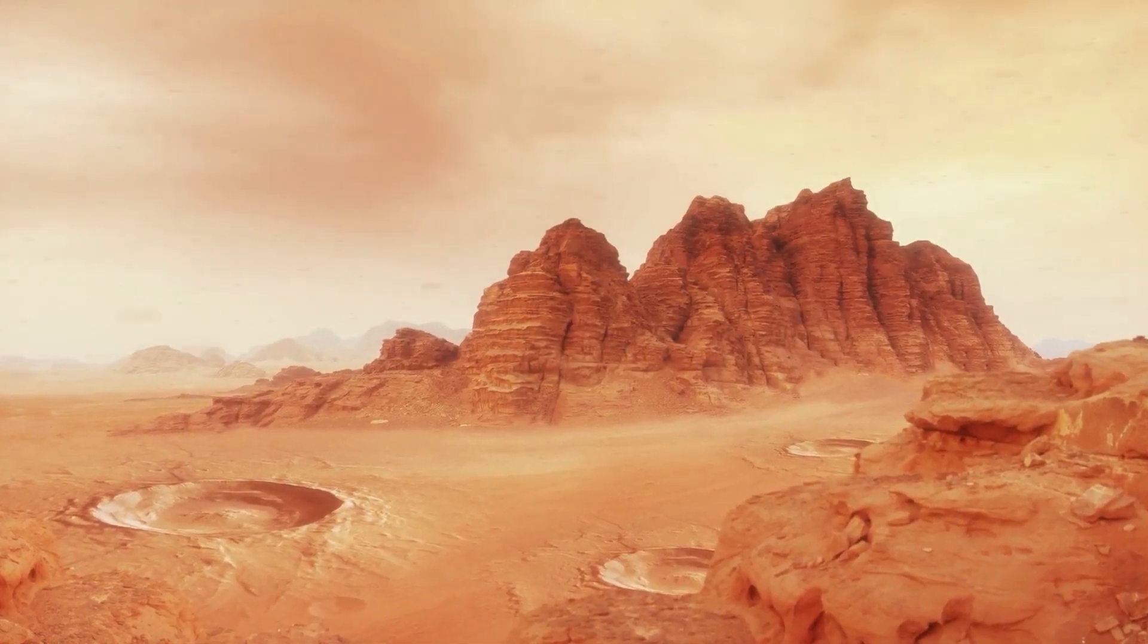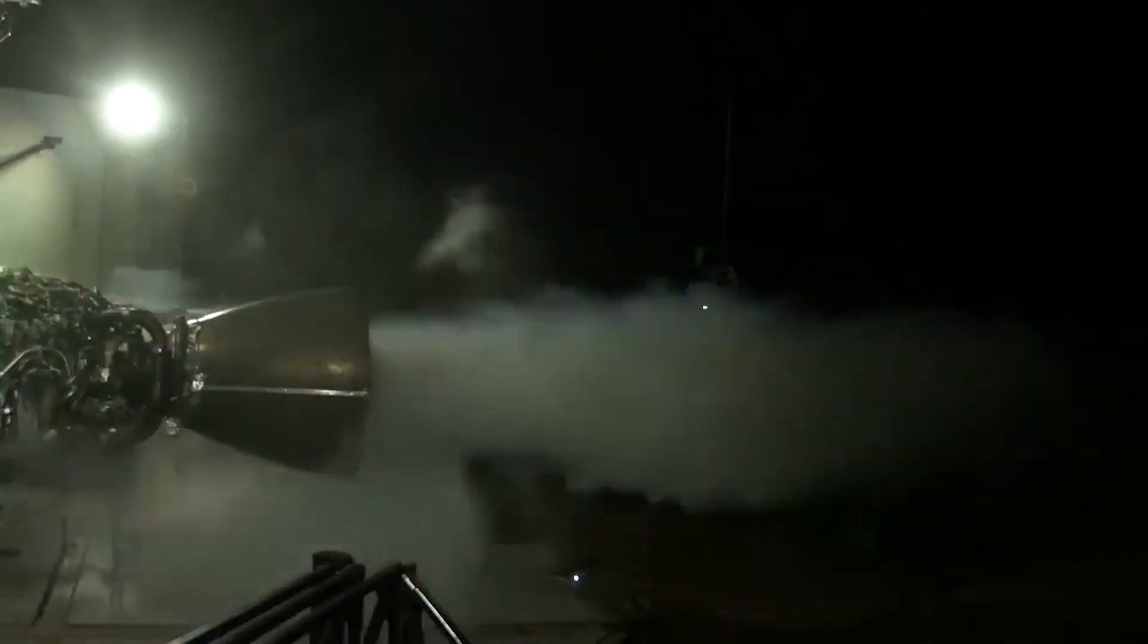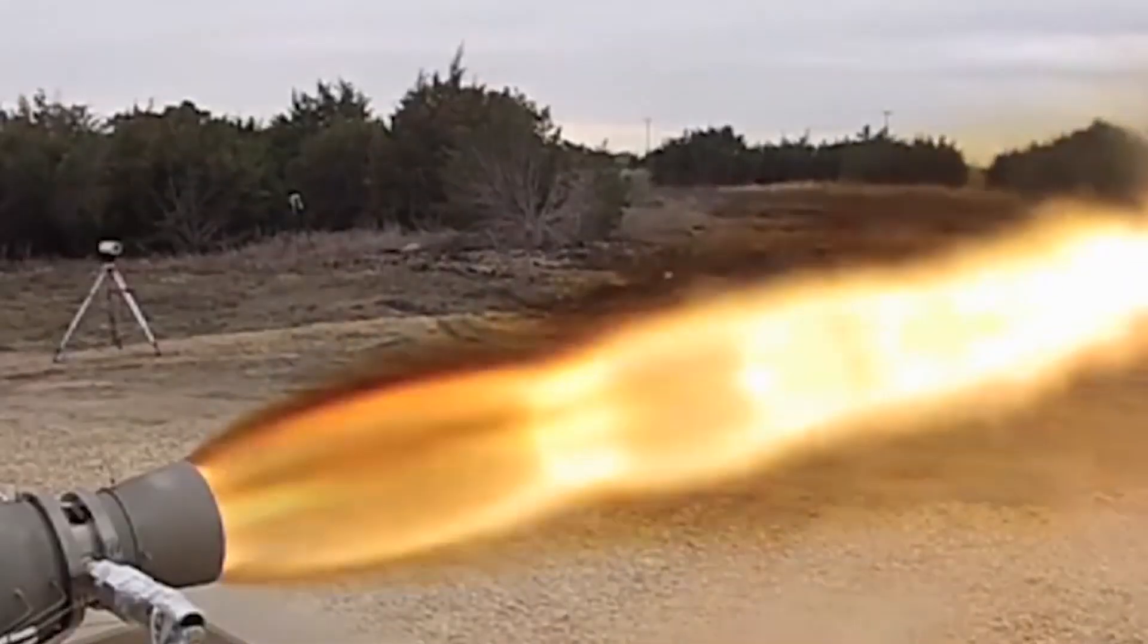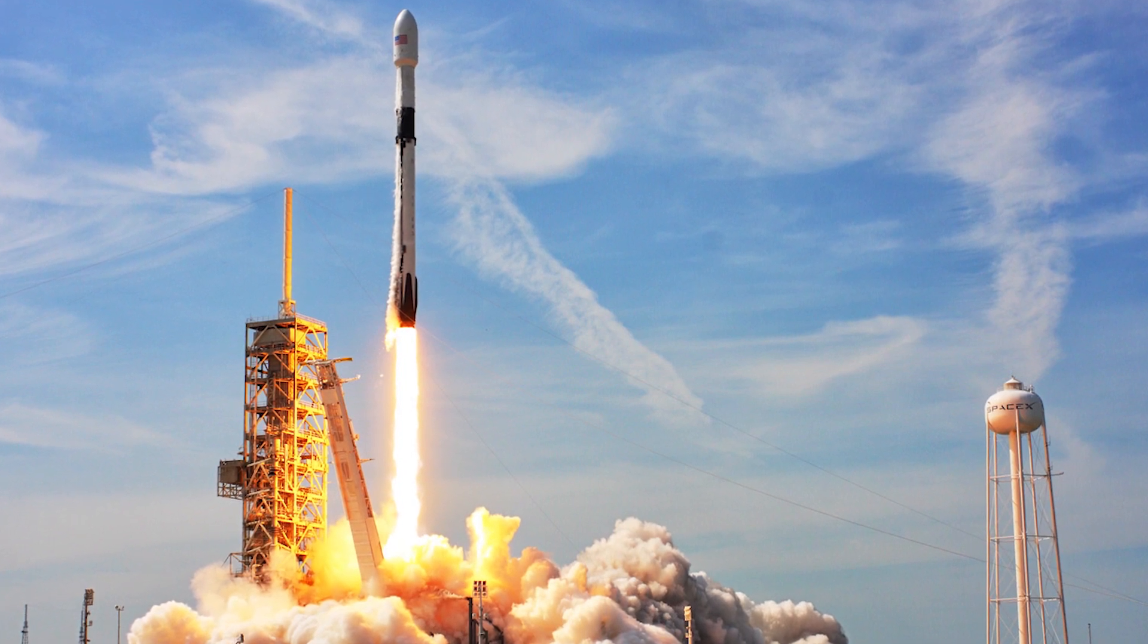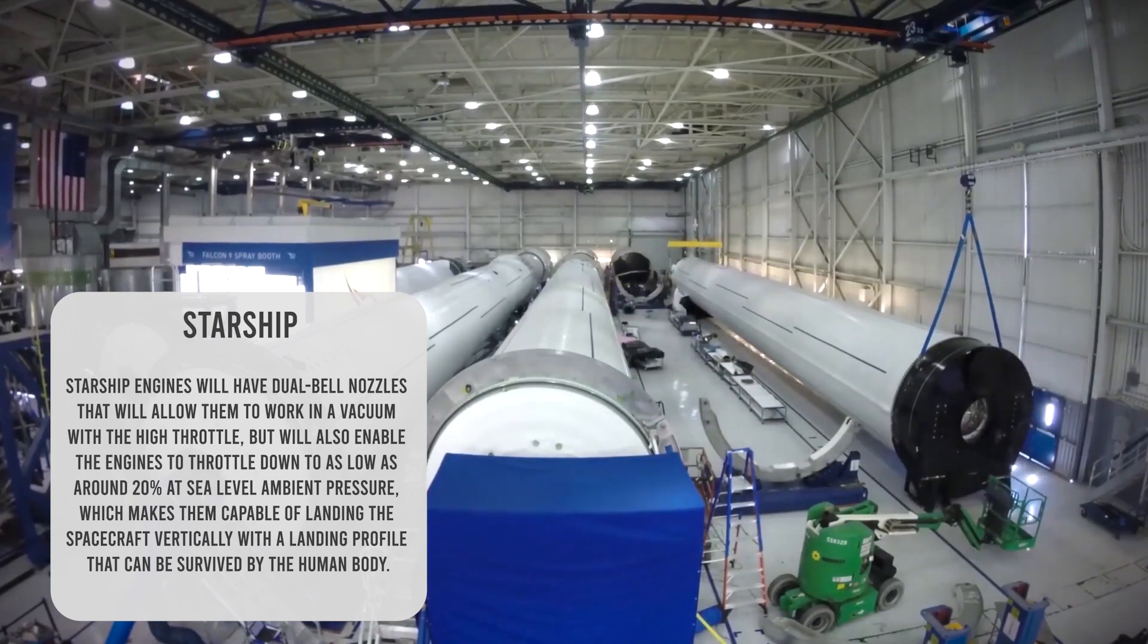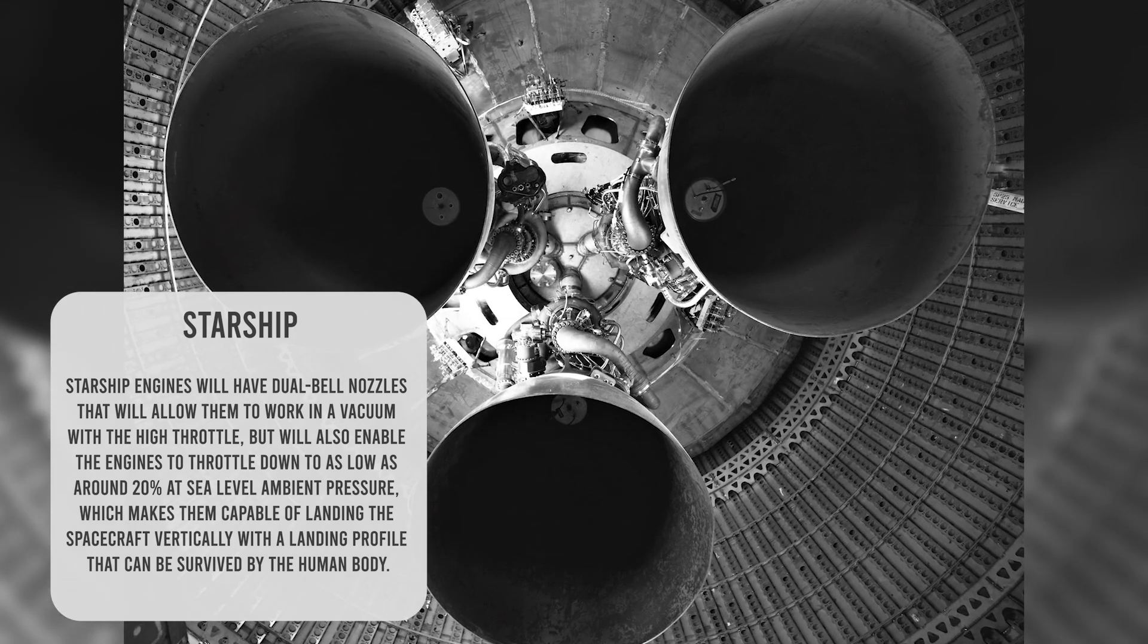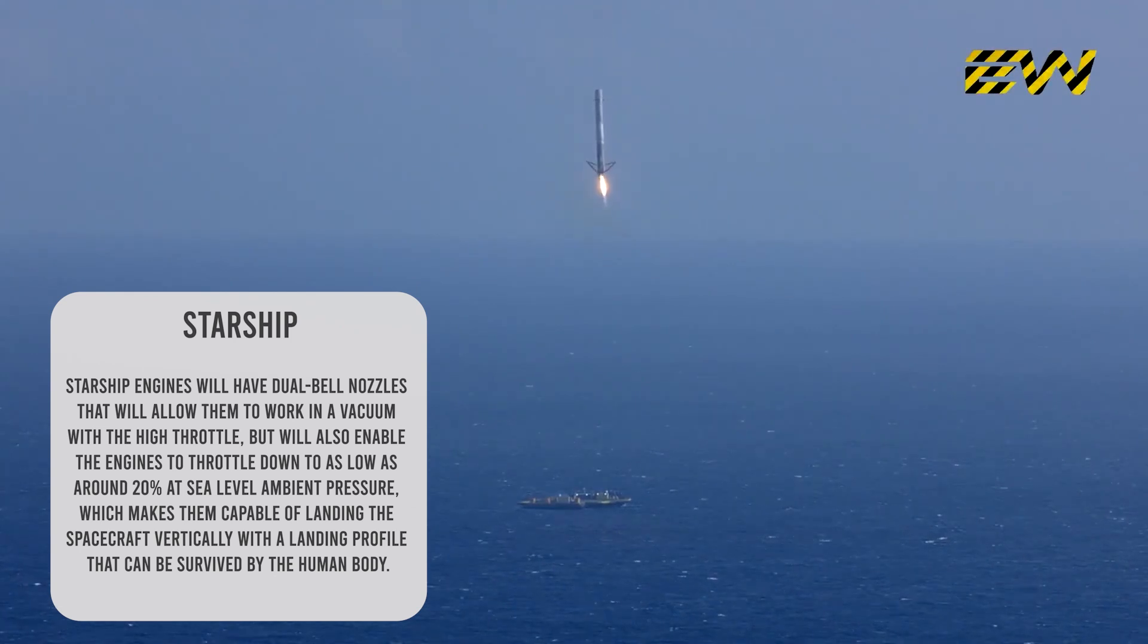Starship's high-level thrust is a potential reason for the vehicle to have issues with landing. Engines need to be able to slow themselves down to have a velocity of zero when the altitude is zero. However, different experimental pressures could affect an engine's capability to throttle down. This inability to throttle down is why Falcon 9's second stage don't land vertically. Landing is very difficult without proper throttles and hovering is impossible. Reports have shown that Starship engines will have dual bell nozzles that will allow them to work in a vacuum with the high throttle, but will also enable the engines to throttle down to as low as around 20% at sea level ambient pressure, which makes them perfectly capable of landing the spacecraft vertically with a landing profile that can be survived by the human body.